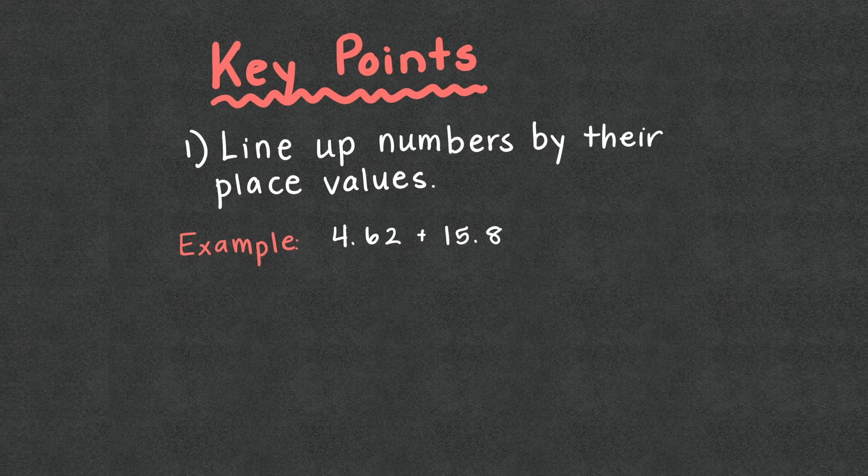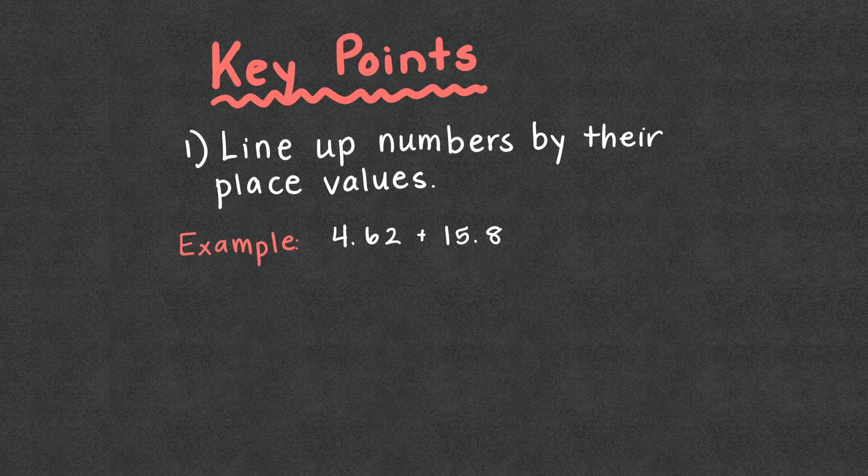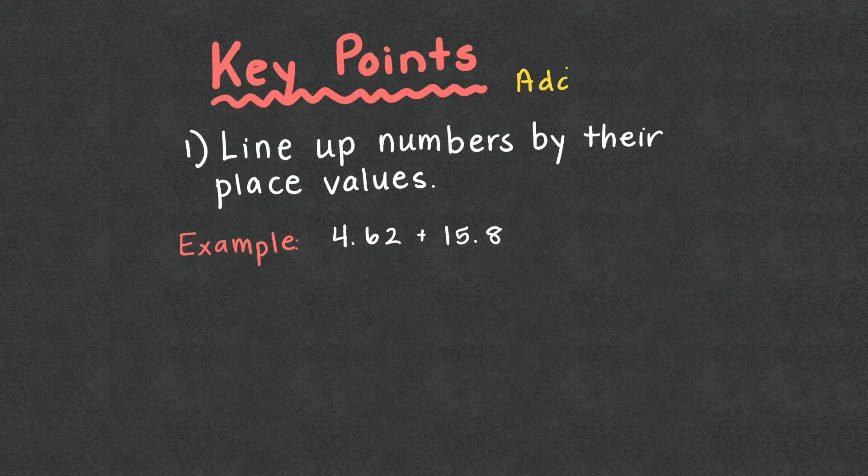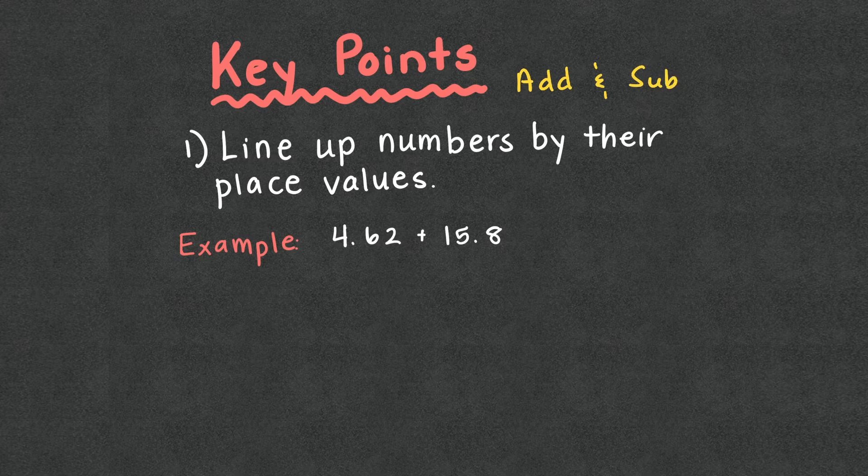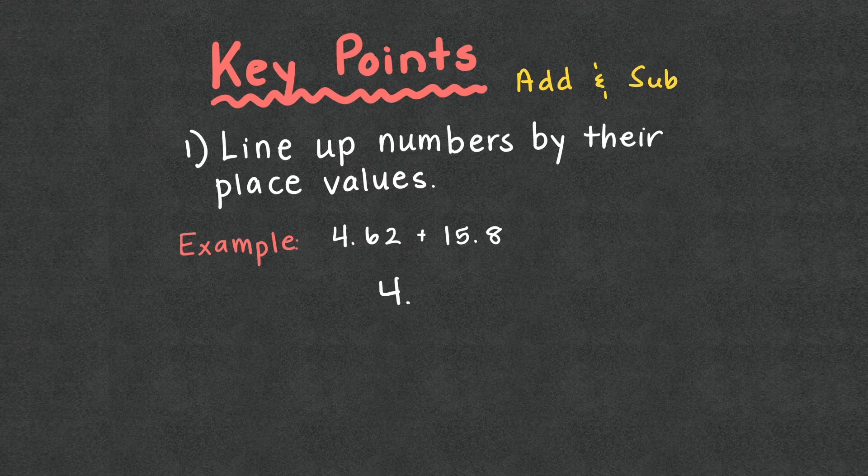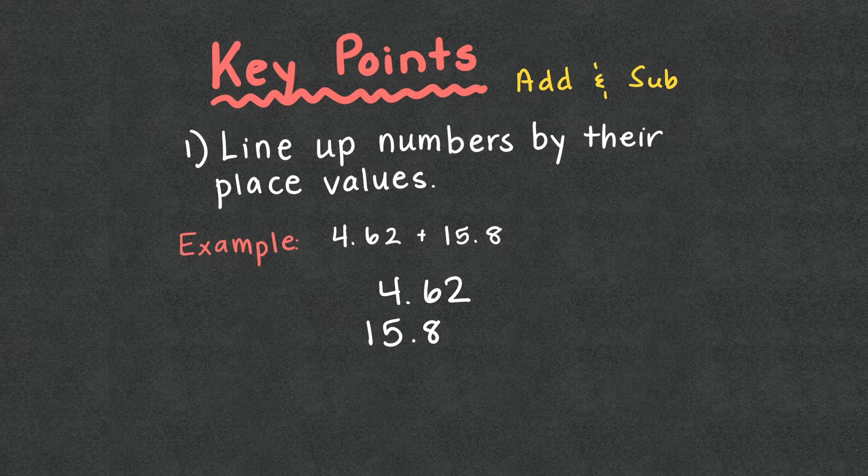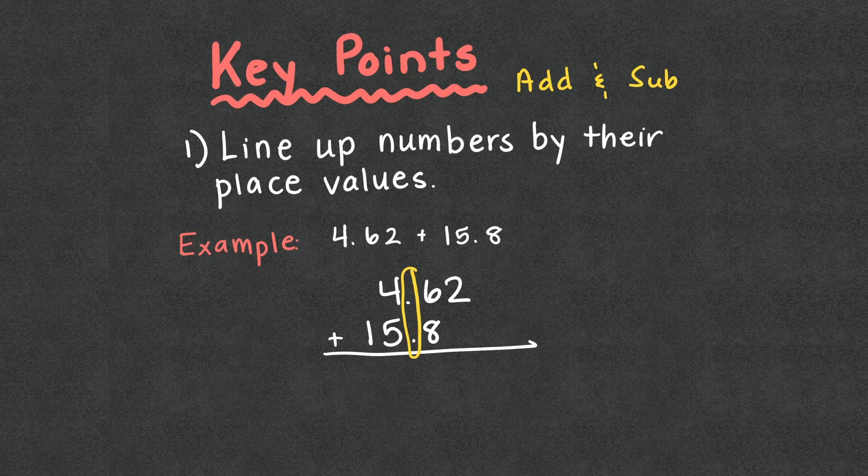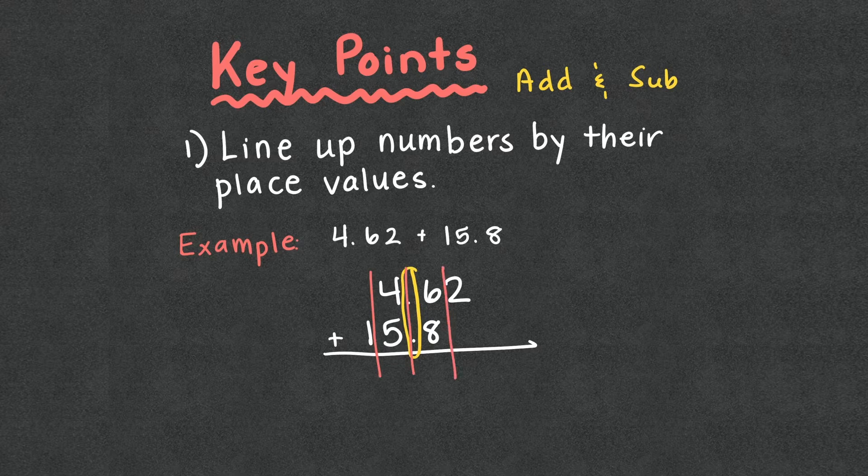Our first key point, and this is one that is going to be very specific for just addition and subtraction. Remember, this is just adding and subtracting. Don't take this with you when you multiply or divide as there are different rules. But our first rule is we're going to line up their numbers by their place values. So if we have 4 and 62 hundredths, I'm going to write 15 and 8 tenths. So before I add them, I make sure I line up the decimal point. That's just a good check to make sure they're aligned. And we'll talk about this again, but it's making sure that all our place values are lined up.